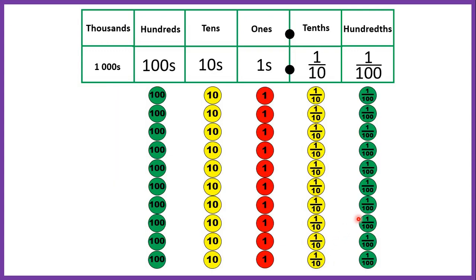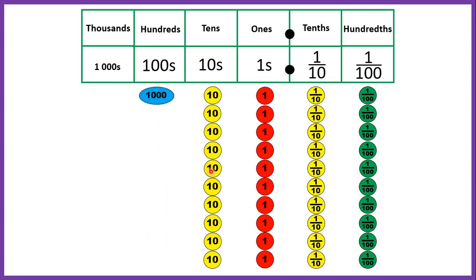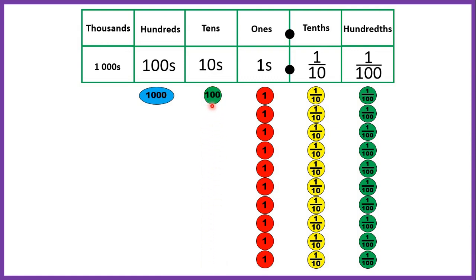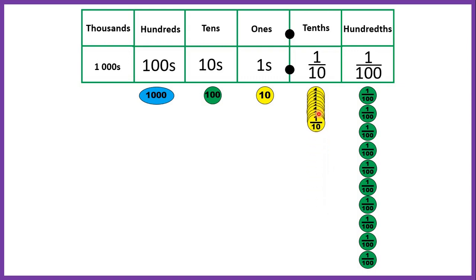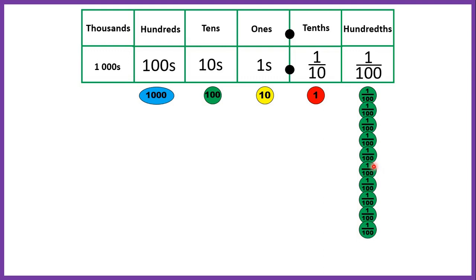We can also go the other way. So if we've got 10 hundreds, we know that's the same as 1,000. 10 tens is the same as 100. 10 ones is the same as 10. And we carry on in the same way going into decimal place values: if we have 10 tenths, that's the same as having 1. And if we have 10 hundredths, that's the same as having 1 tenth.